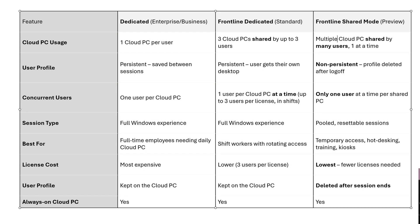The other major difference is Windows 365 Frontline Shared Mode is now a non-persistent workload. It's meant for users who are coming in and doing timesheets, doing anything which doesn't require any kind of profile personalization. Only one user at a time can use a Windows 365 Frontline Shared device - pooled, resettable sessions. Whereas Dedicated and Frontline is a full Windows experience where the user gets their own desktop and can personalize it, the Frontline Shared Mode is non-persistent - nothing is saved, the session resets upon log off.